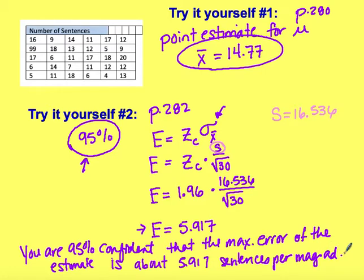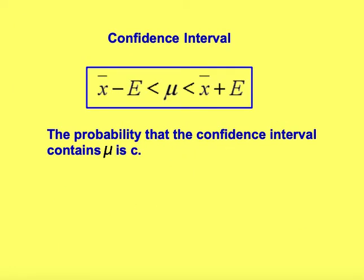That's how you find the error. We put the population mean in the middle because that's what we're looking for, and we take our sample mean and add and subtract the error. The confidence interval shows us the probability that the interval contains the population mean, given by C. In the problem we're working on, our confidence level is 95%, so we would be 95% confident that the mean falls within a certain region.